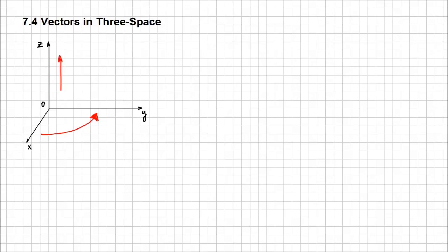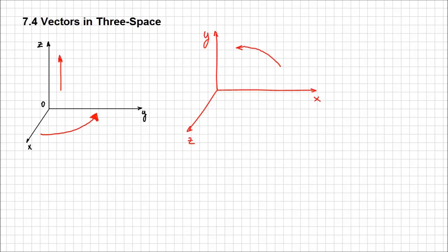This placement of the axes x, y and z is a very common way. However, that doesn't mean you're always going to encounter it this way. For example, if you take the axes as you know them from the 2-space — x pointing to the right and y pointing up — and apply the right-hand rule rotating x over y, that gives us the direction of the z-axis pointing towards us. But if you have x pointing up and y towards you, then z is going to point to the right.